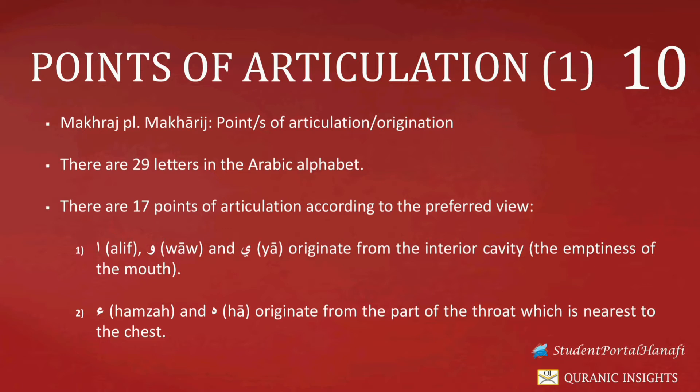Before we mention where these three letters originate from, it is necessary we understand what Alif refers to, and what Wao Madda and Ya Madda both refer to. Commonly, we usually think that Alif refers to the first letter of the Arabic language regardless of the manner in which it may appear. However, the reality is that according to the later scholars, the Muta'akhirun, this will not be termed an Alif — rather, it will be referred to as Hamza. For this reason, it is necessary to understand the difference between an Alif and a Hamza.